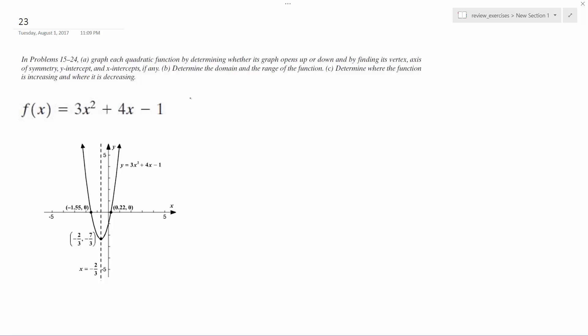And then determine the vertex. You can see everything's already labeled there, the vertex and everything, but if you don't have a graph, use negative B over 2A. So that'd be negative 4 over 6, which is negative 2 thirds, which is seen here with the vertex. I just circled it there. And if you plug it in, you end up getting negative 7 over 3 out.